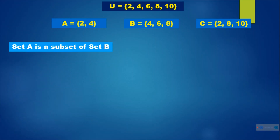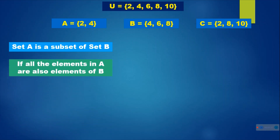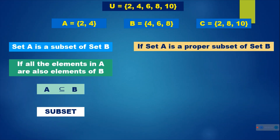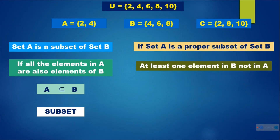Set A is a subset of set B if all the elements in A are also elements of B. For example, A has {2, 4} and B has {4, 6, 8} — they share the element 4, so A is a subset of B. If set A is a proper subset of set B, at least one element in B is not in A. Since 2 is in A but not in B, we also call them a proper subset.